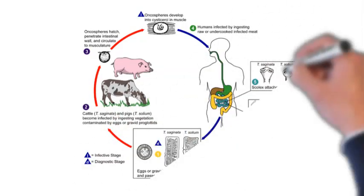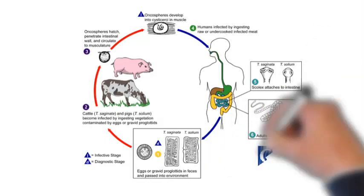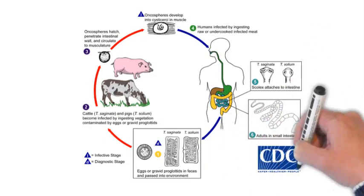Worm parasites go through stages of development that can look very different from the adult.